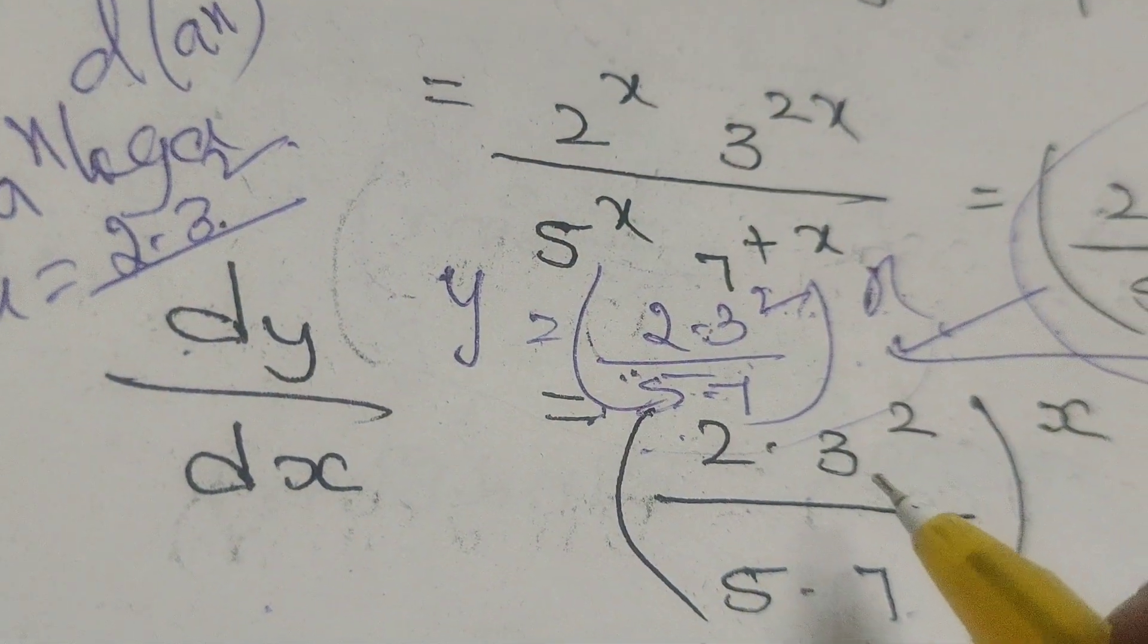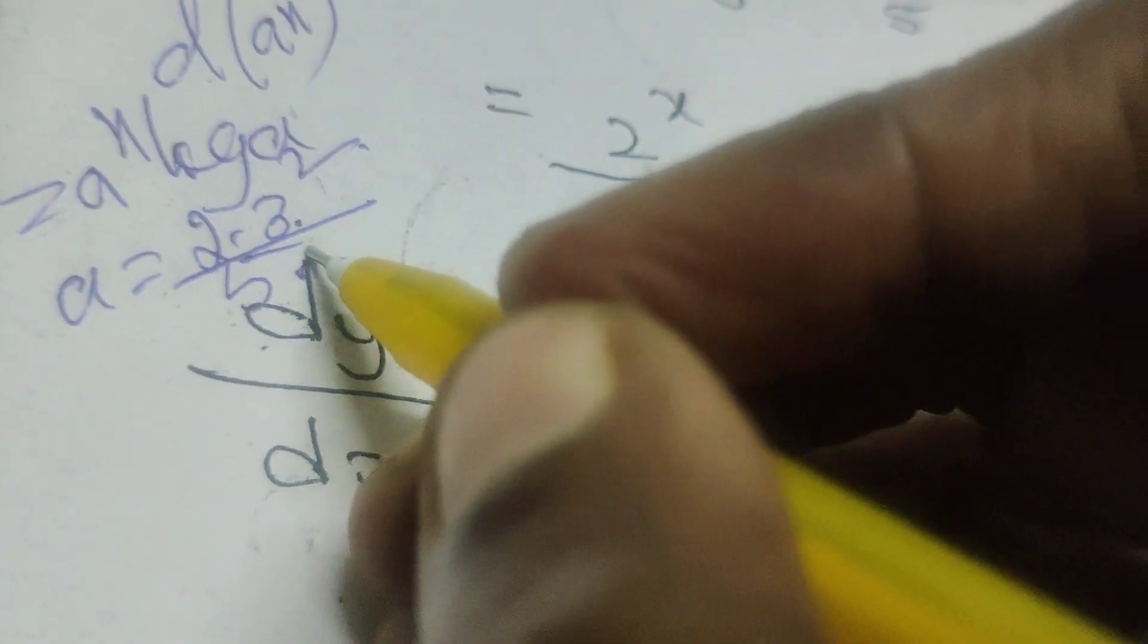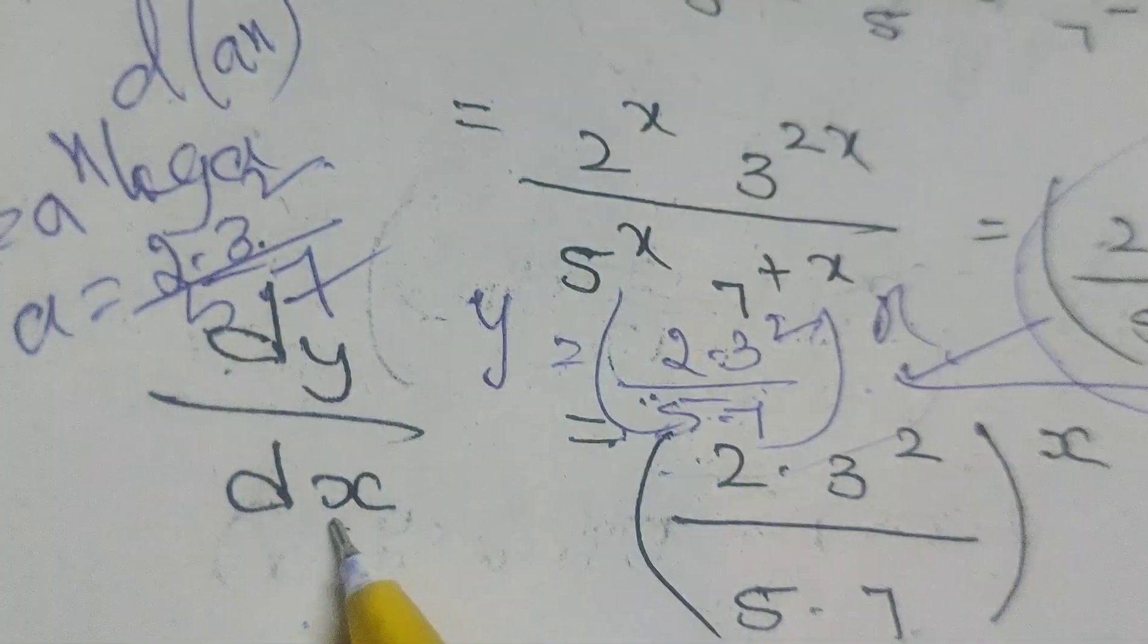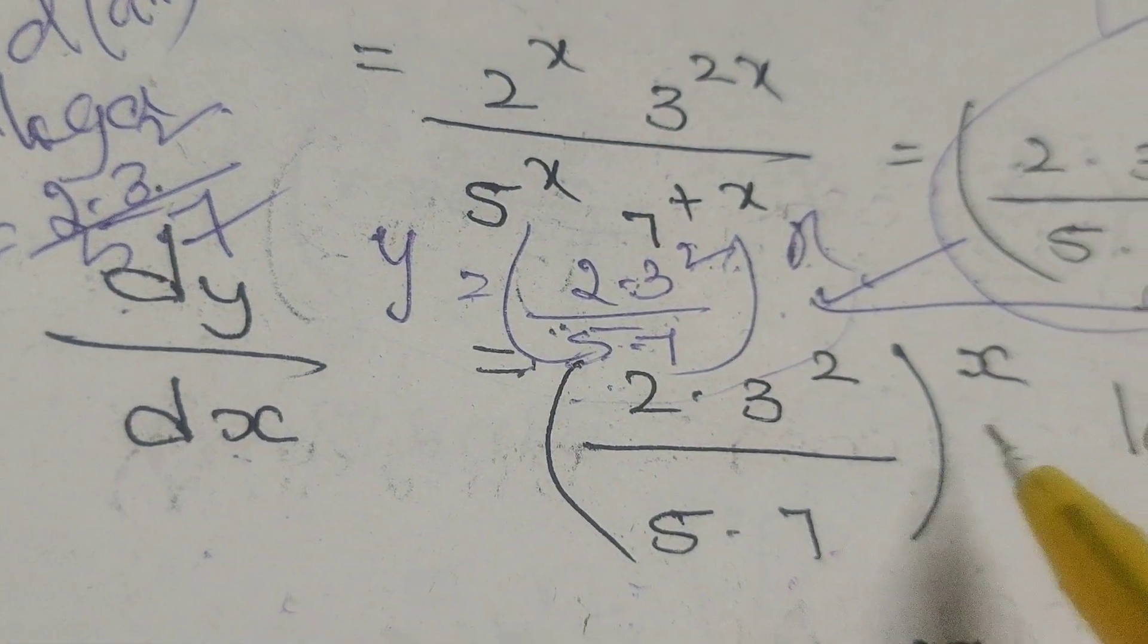a equals to here, 2 into 3 square by 5 into 7. Okay, now a power x log a.